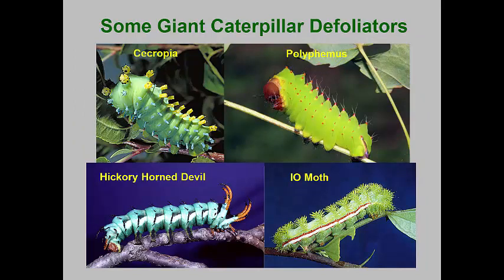The giant silkworm moths have spectacular larvae, some of which can reach nearly five inches in length. These are generally solitary caterpillars that hide surprisingly well in the foliage of their host plants. Most are discovered when the larvae are in the last instar and are wandering about in search of places to pupate. Because of the minor damage they do, most recommend leaving them alone, as their populations have declined dramatically over the last few decades, primarily due to the introduction of parasitic wasps used to control other caterpillar species. The only one that needs to be handled with care is the IO moth, which has spines containing stinging hairs.